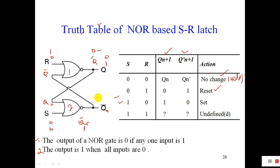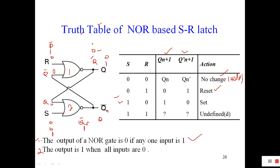Let's discuss S=1 and R=0. Applying the statement — if any one input is 1, output will be 0. So S=1 makes the output of gate 1 equal to 0. That 0 feeds into gate number 1 as input. Then 0 plus 0 equals 0, inverted gives 1. So Q bar becomes 0 and Q becomes 1.